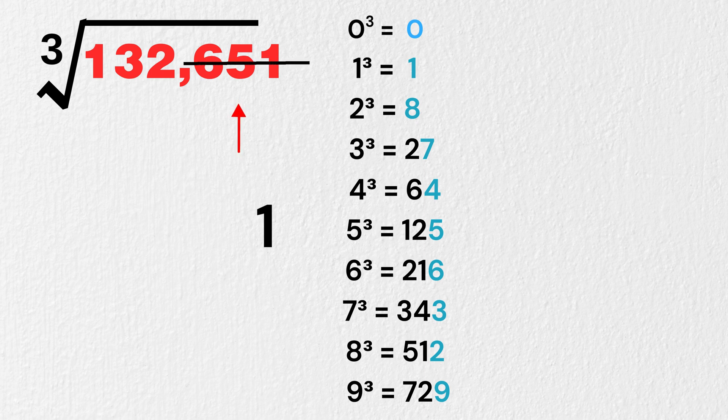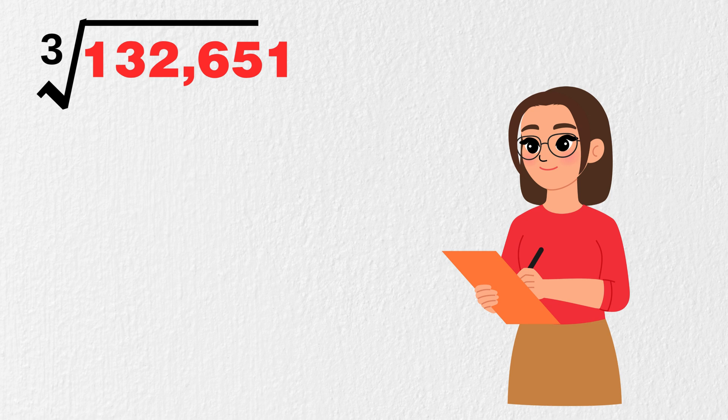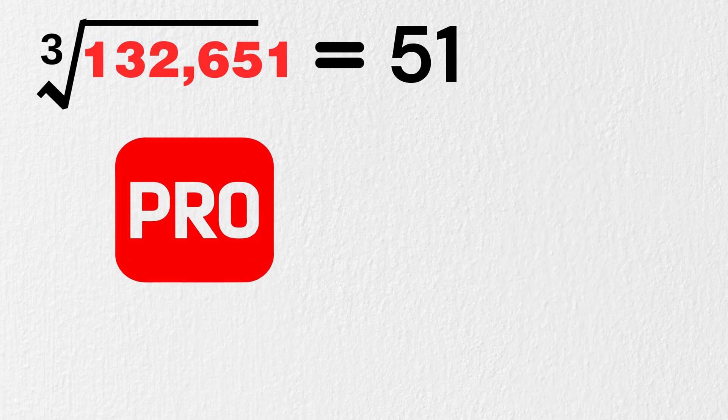Finally, we want a cube which is just less than or equal to 132. That is number 125, which is 5 cubed. So, we write 5 here. Our answer is cube root of 132,651 is 51. You have just mastered this trick of finding cube root.